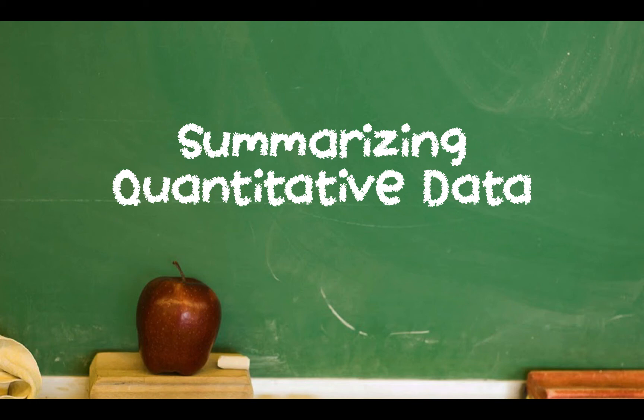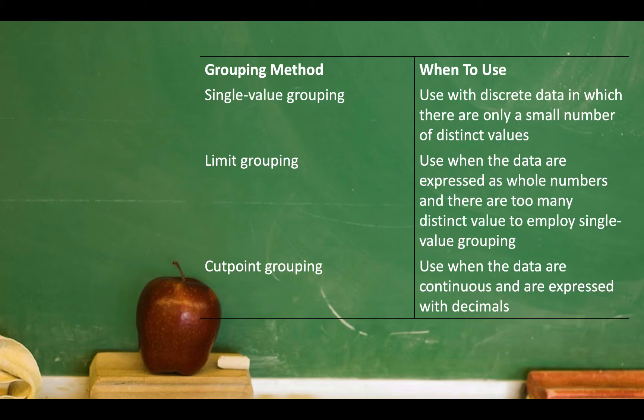Hello, and welcome to my video on summarizing quantitative data. On page 55 of our textbook, there is a table at the bottom of the page that talks about the different types of grouping methods for quantitative data. We have single value grouping, limit grouping, and cut point grouping. We know which grouping method to use based upon the characteristics of the type of data.